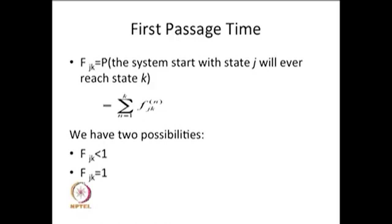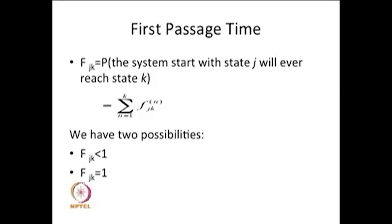Now we have two cases. One is when f_jk is less than 1 — what is the situation corresponding to this probability being less than 1? The other case of interest is when f_jk is equal to 1, meaning with probability 1 you will ever visit state k by starting from state j, versus whether this probability is less than 1. If it is less than 1, then with probability 1 minus f_jk there is a possibility you would never visit state k starting from state j.